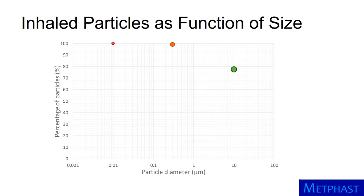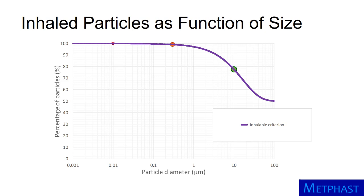By international agreement, a relationship has been established for inhalation percentages as a function of particle size for use in particle sampling protocols. The relationship is shown by this purple curve and is referred to as the Inhalable Sampling Criterion. The curve shows that particles larger than about 300 nanometers, or 0.3 micrometer, are inhaled at lower and lower efficiencies as particle size increases, due to greater particle inertia and gravitational settling that keep them from being breathed into the nose or mouth.